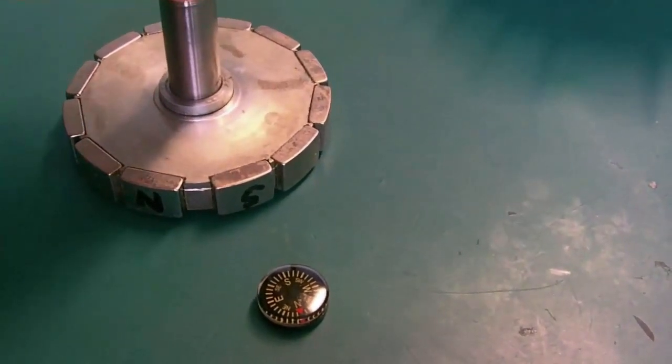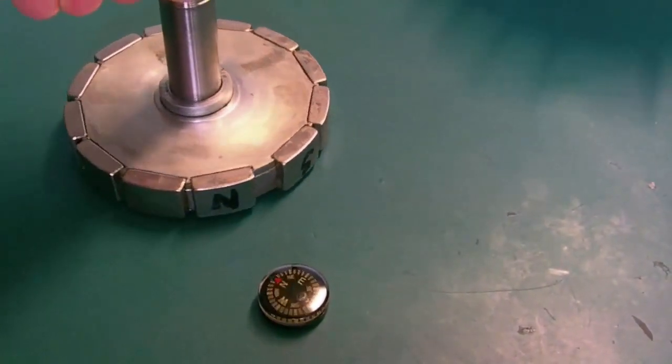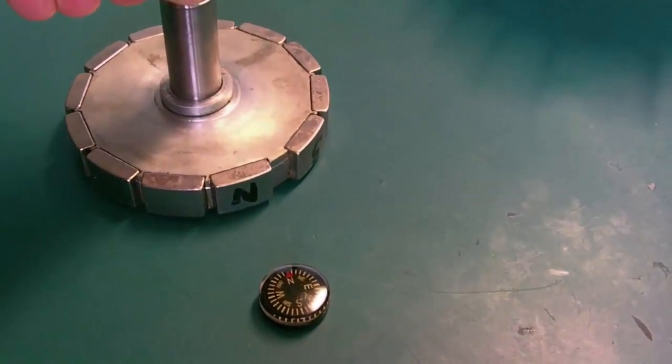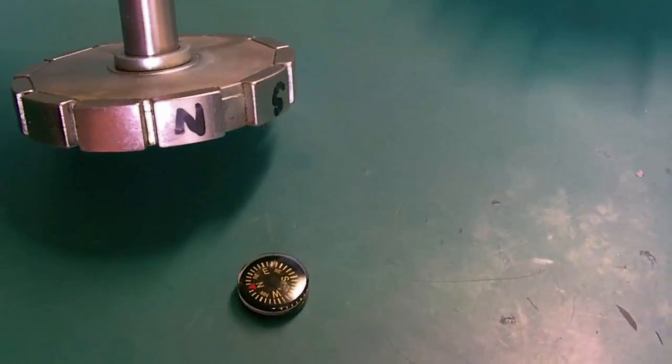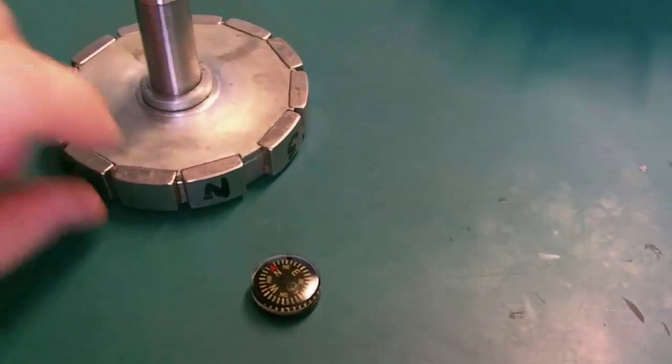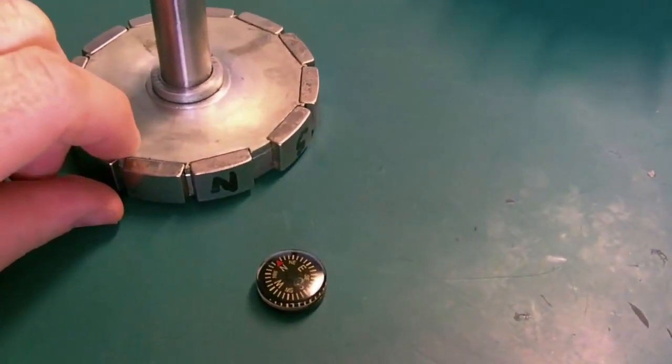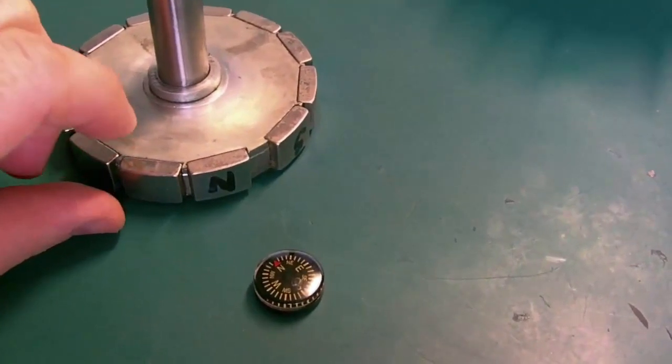Back to the rotor. You can see a south pole on that particular magnet, you can see a north pole on that particular magnet. The magnets themselves, they're not very big.